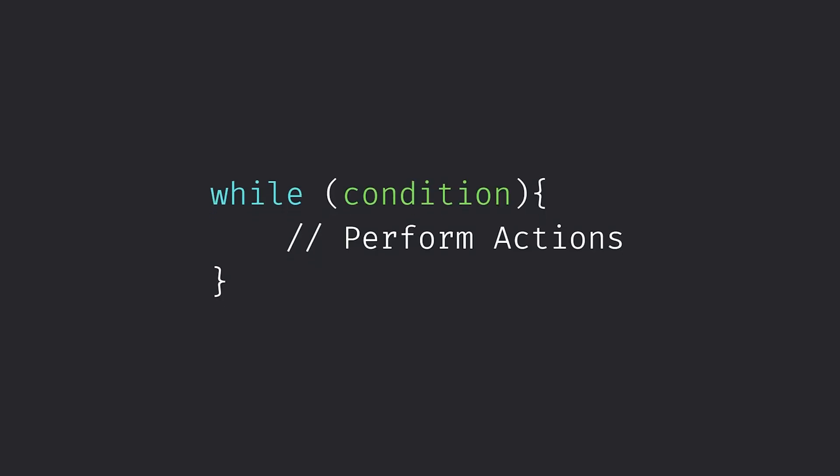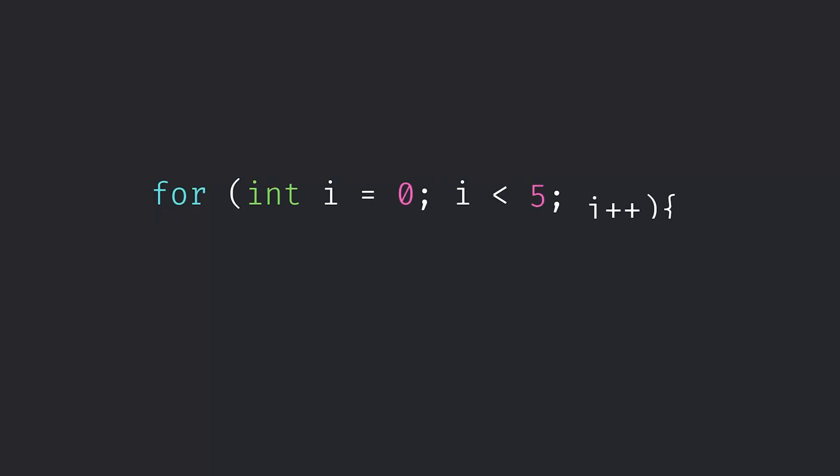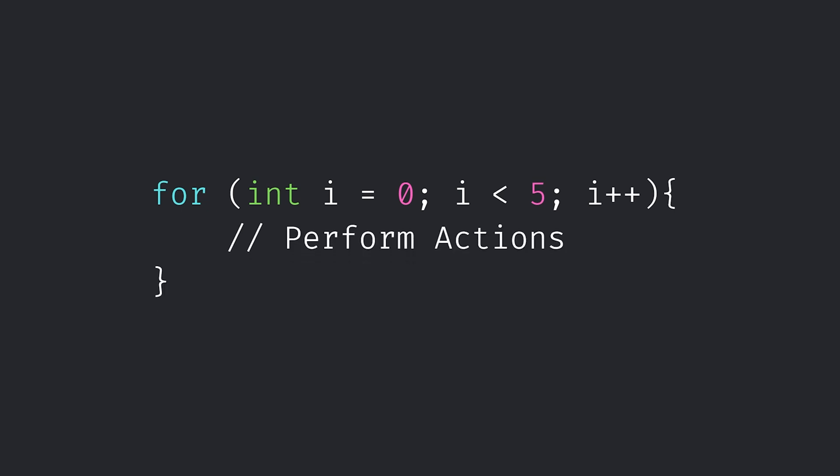A while loop essentially says: while a certain condition is true, perform these actions. On the other hand, the for loop is a bit more complicated in how we write it out, but it's essentially saying that for a given amount of times, repeat this action. The for loop is used when we have an understanding of how long the loop should run for — for example if you only want it to run 10 times or to a certain length of an array. The while loop is conditional based — we only want it to run while that condition is true, and we don't care exactly how many times it runs.